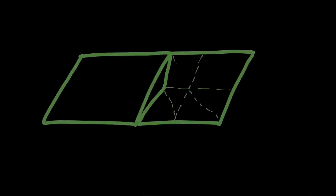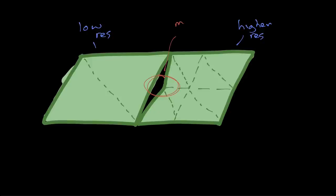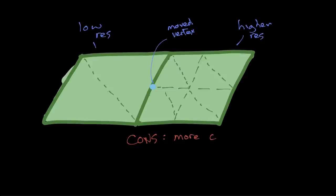That leads us to another potential solution. Instead of skirts, we could instead stitch the chunks together by moving the vertices in the higher resolution chunk to match the lower resolution one. There's a couple downsides. The first being that this adds a bit of complexity, since each chunk now needs to know what resolution its neighbor is.